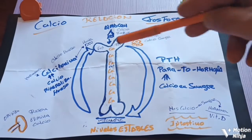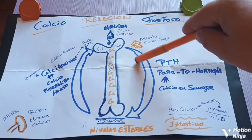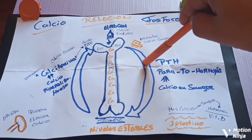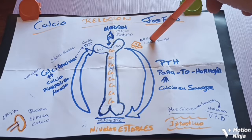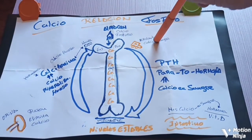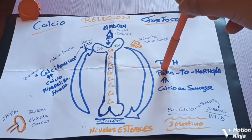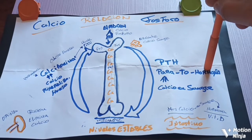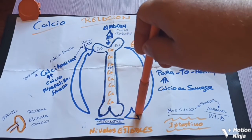¿Qué es lo que pasa? Cuando la sangre necesita calcio urgente, se activa la hormona PTH, que significa la hormona llamada paratormona. La paratormona es la encargada de enviar el calcio a la sangre en el momento que hace falta.